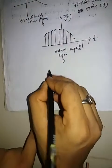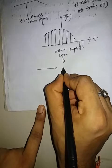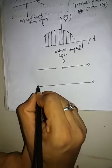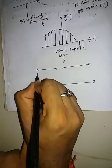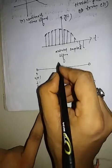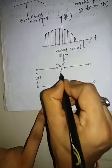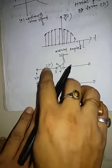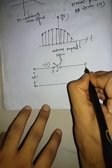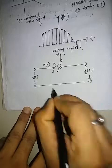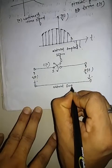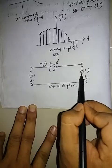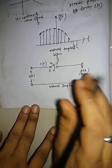This is the circuit diagram of the natural sampler which generates the natural sampling signal. The input is the continuous time signal XT, and there is a switch S. CT is the periodic pulse train and the output of the natural sampler is denoted by GT.